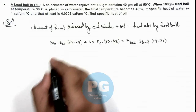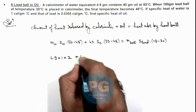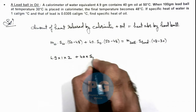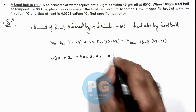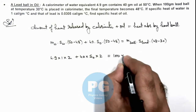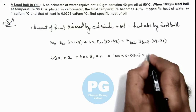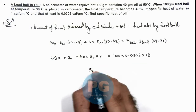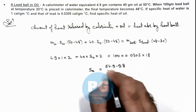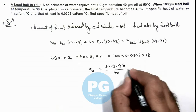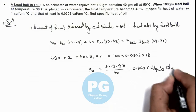Substituting the numerical values: 4.9 multiplied by 1 multiplied by 2, plus 40 multiplied by specific heat of oil (which we wish to calculate), multiplied by 2, is equal to 100 grams multiplied by specific heat of lead 0.0305, multiplied by 18. Simplifying, we get the specific heat of oil as (54.9 minus 9.8) divided by 80, which is equal to 0.563 calories per gram degree centigrade. That is the result of this problem.